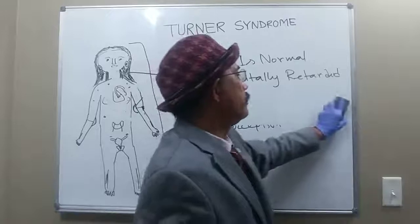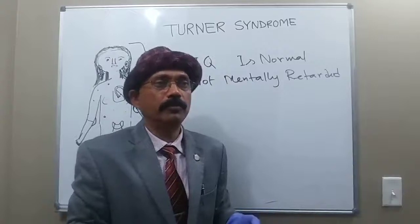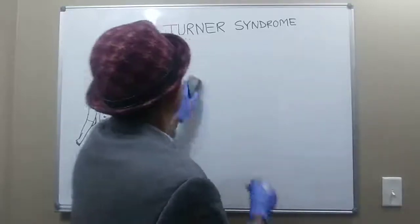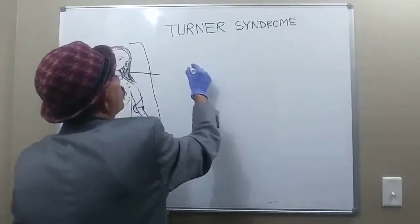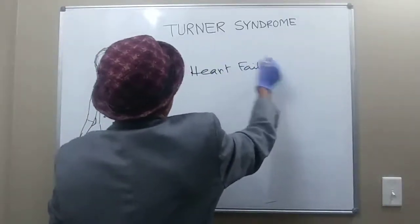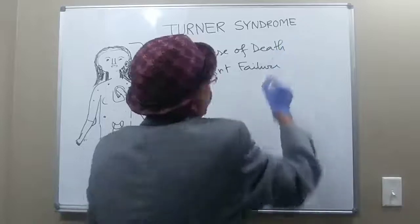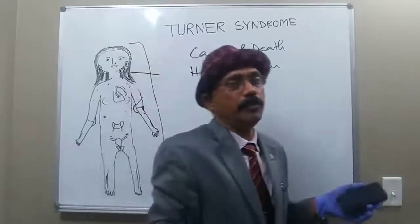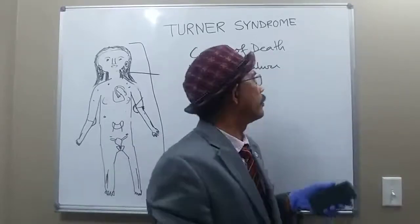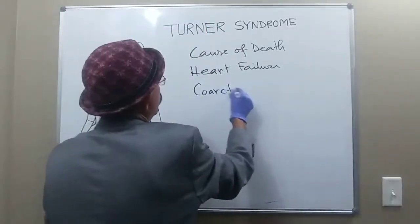Turner patients may survive many years without any problem, like normal individuals. However, when they do die, the cause of death is most commonly heart failure — due to coarctation of the aorta, which can lead to left ventricular hypertrophy.